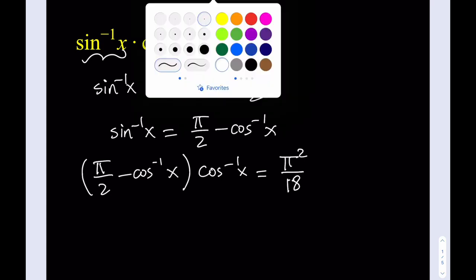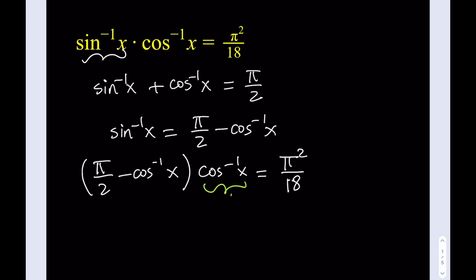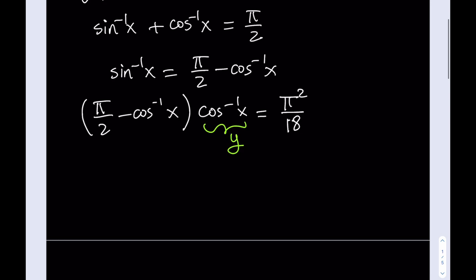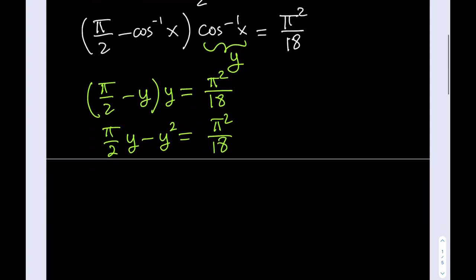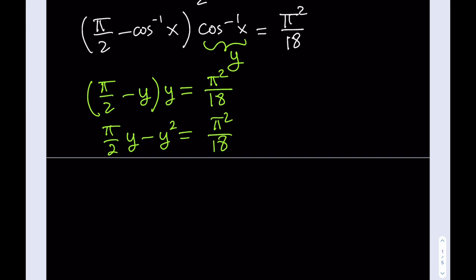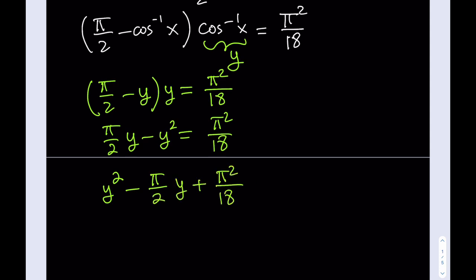We can go ahead and replace cosine inverse of x with another variable, say y. Then we get pi over 2 minus y, times y, equals pi squared over 18. If you distribute, you get pi over 2 times y minus y squared equals pi squared over 18. Now remember that pi is a constant — it's a number, just like 5, 2, or negative 3. So we do get a quadratic equation. Let's put everything on the right-hand side to make y squared positive, negate the y term, and set the whole thing equal to 0.